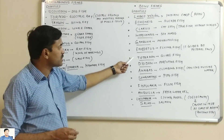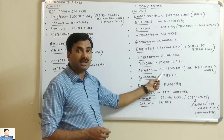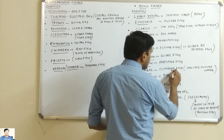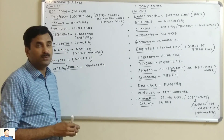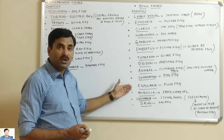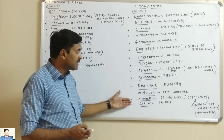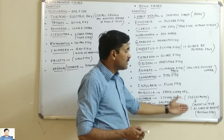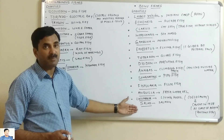Tetrodon — the globe fish. Diodon — the porcupine fish. Anabas — the climbing perch or climbing fish; it can live outside water for a few days. Syngnathus — the pipe fish. Fistularia — the flute fish, because it looks like a flute. Anguilla — the fresh water eel. Latimeria — the living fossil, also called coelacanth; it is very important from an evolutionary point of view as it is an ancient fish, caught in 1938 off the coast of Africa. And Salmo — the salmon.